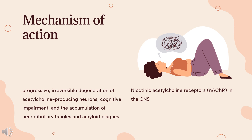Galantamine binds to nAChRs at the allosteric site, leading to a conformational change of the receptor, increased ACh release, and increased activity of neighboring glutamatergic and serotonergic neurons. The modulation of nAChRs facilitates both excitatory and inhibitory cholinergic transmissions in brain tissues and increases receptor sensitivity. The modulated release of other neurotransmitters by galantamine may also contribute to the upregulation of nAChRs and amelioration of behavioral symptoms in AD.